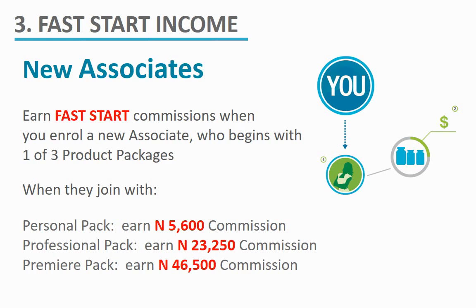The fast start income is earned when you register new associates — this is when your business starts to take off. Fast start income is a weekly bonus, meaning whatever you do from Monday to Saturday, the commission is paid to you the following Wednesday. It is a once-off payment on every new associate — meaning every new associate you register gives you a fast start bonus.